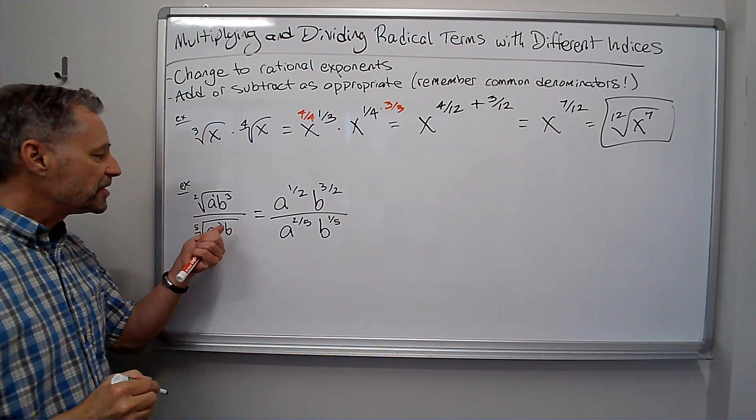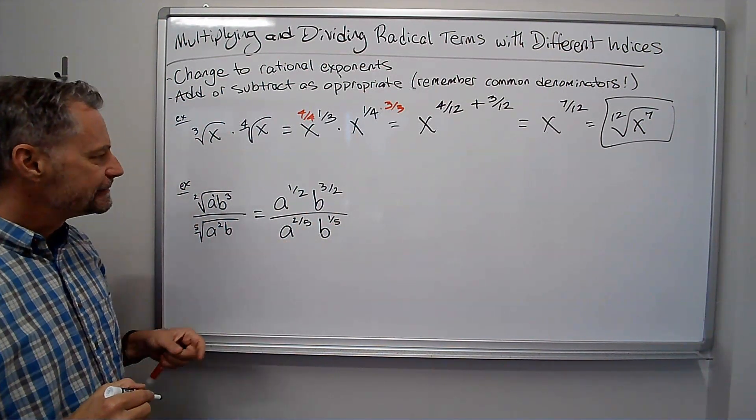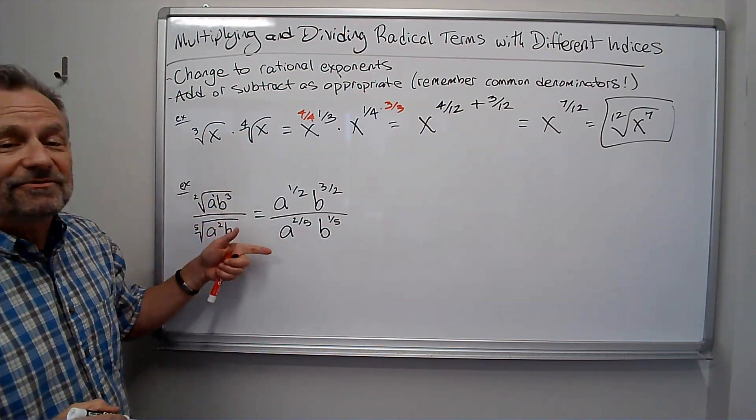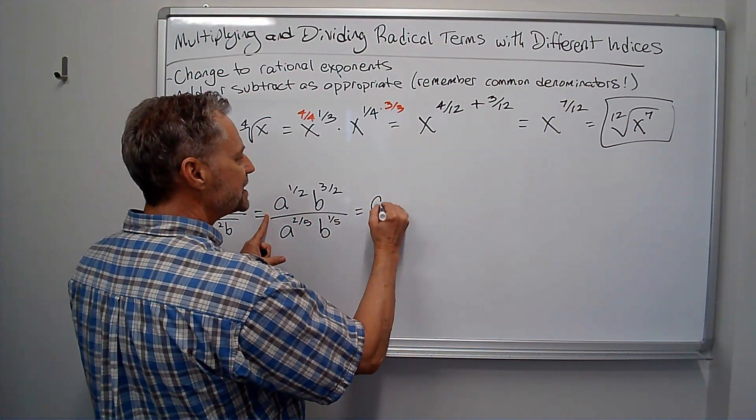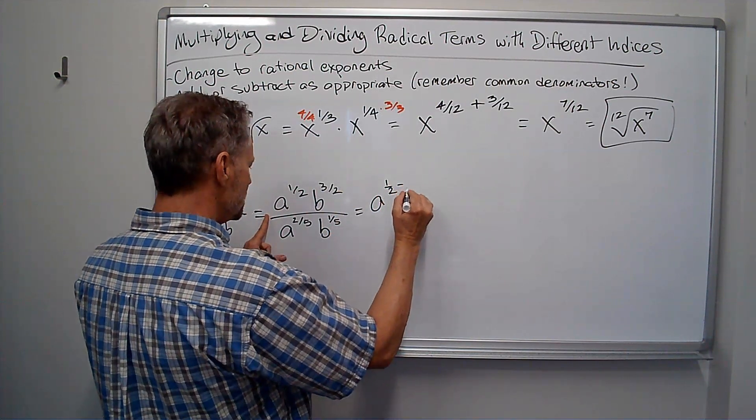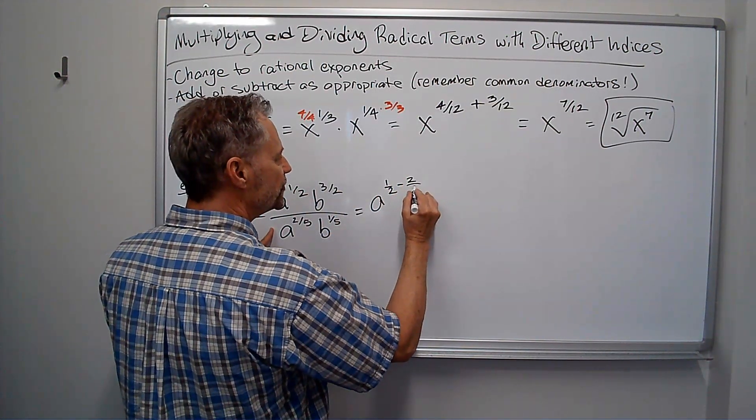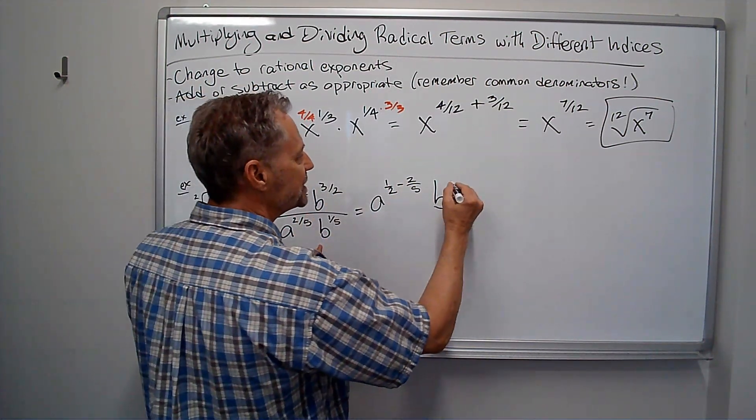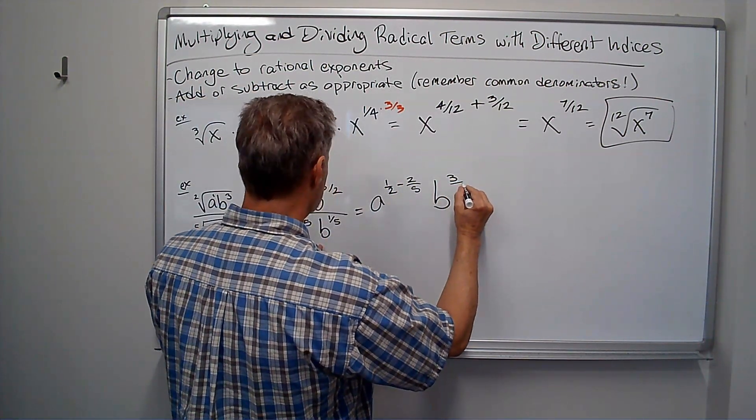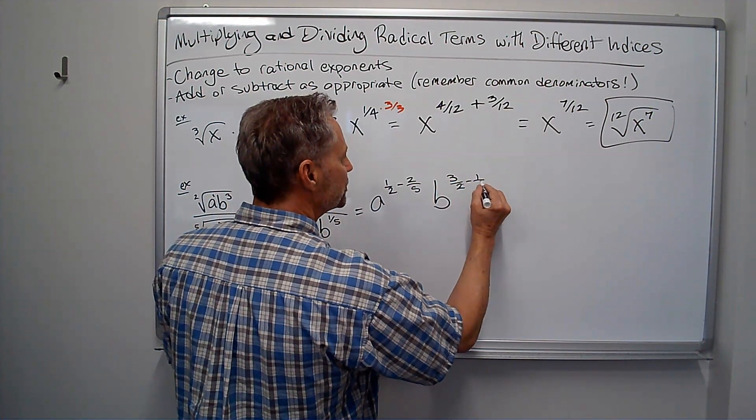Remember, the number on the bottom of the fraction is the root. Now I'm dividing, so now I'm going to subtract exponents. So let's see. With the a's, I get a to the one-half minus two-fifths. And with the b's, I get three-halves minus one-fifths. Three-halves minus one-fifths.